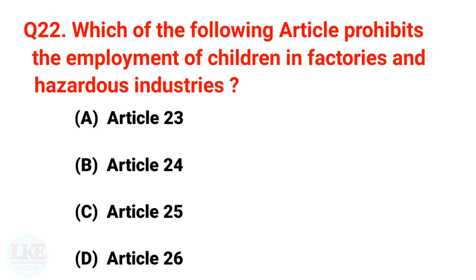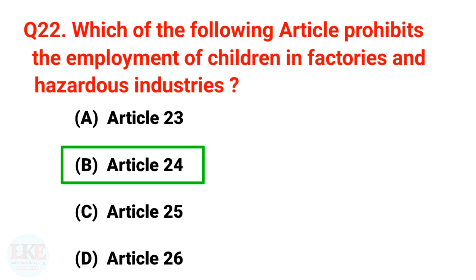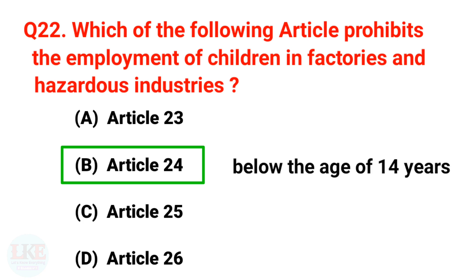Next question: Which article prohibits the employment of children in factories and hazardous industries? The right answer is option B, Article 24. Article 24 of the Indian Constitution prohibits employment of children below the age of 14 years in any factory, mine, or other hazardous industries. However, it does not prohibit their employment in harmless or innocent work.